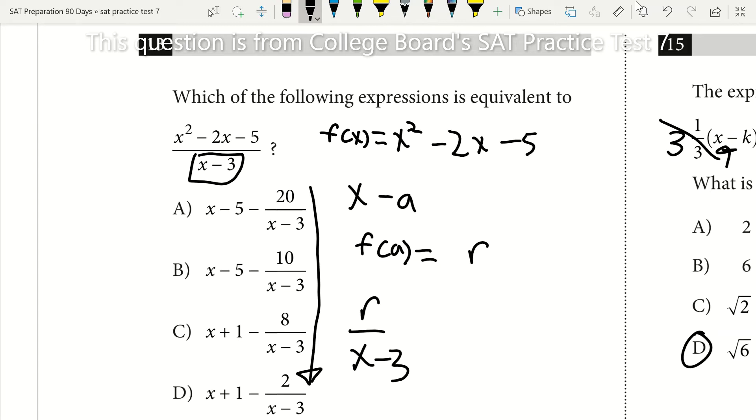So we know that we're just going to be plugging in a for x in this equation f of x. Now in this case we know that our denominator is x minus 3 therefore a will be 3. So now we can just go ahead and solve. So now that you know this trick watch how quickly I can solve this.